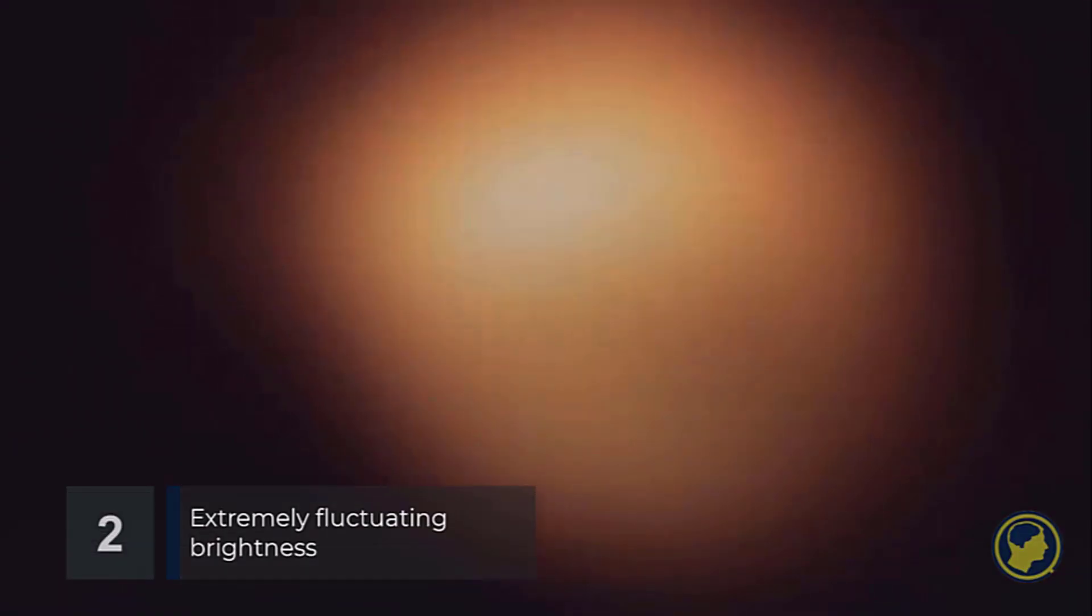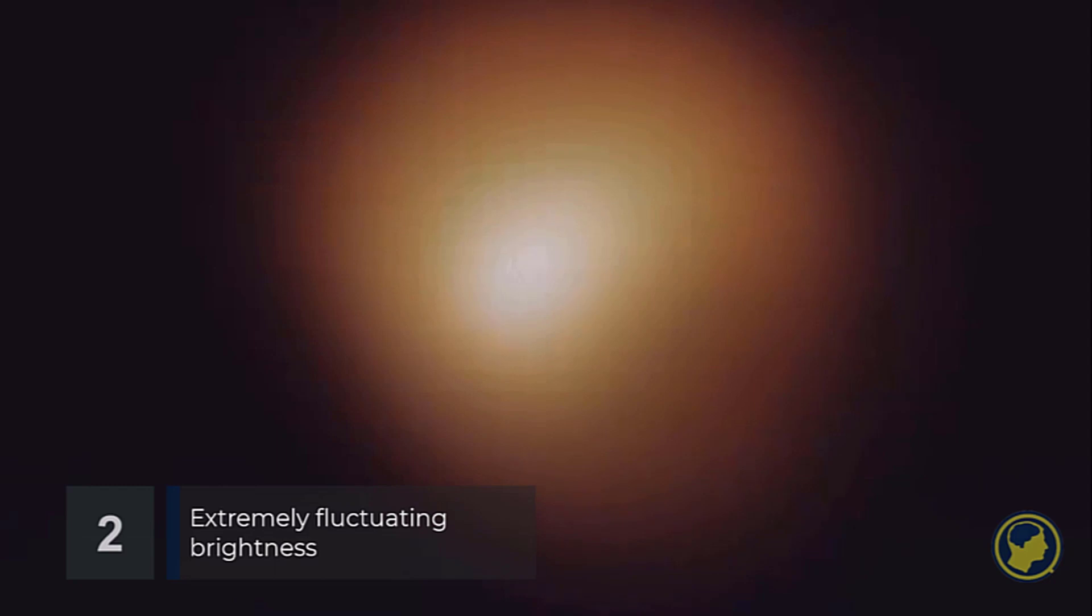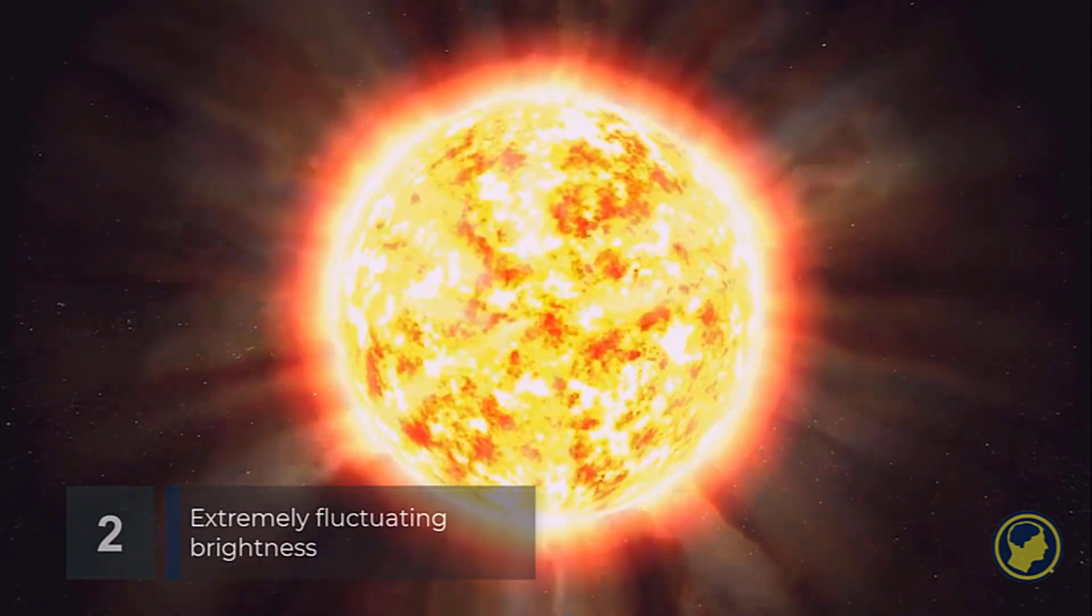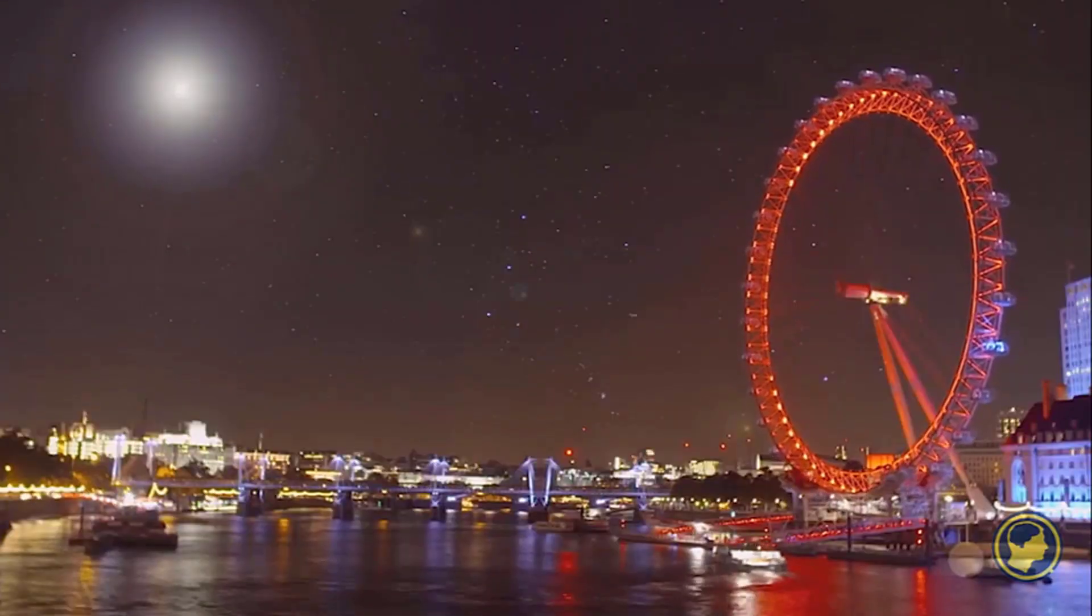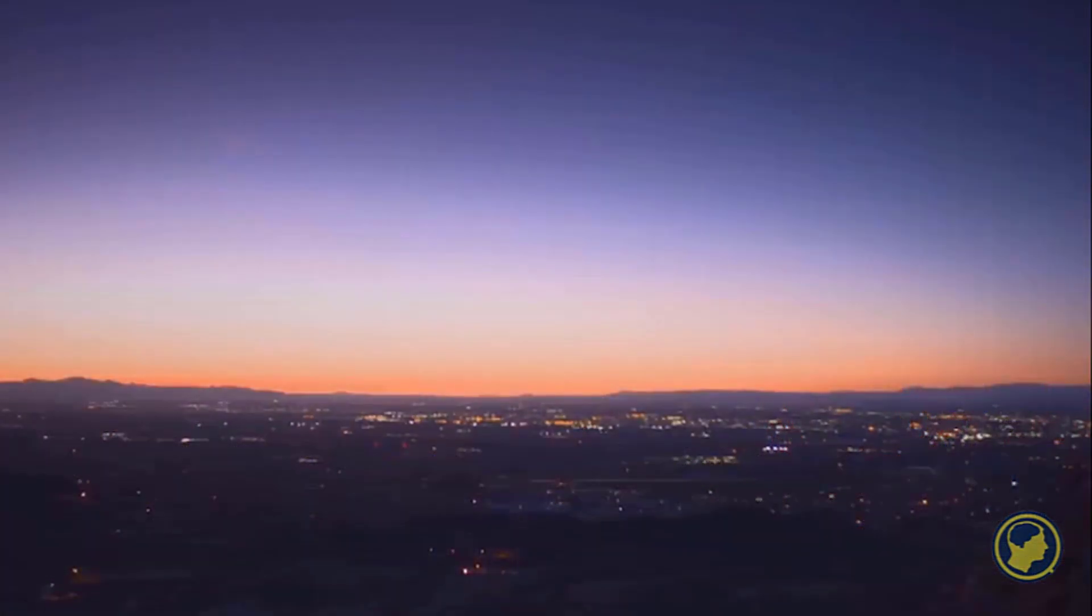Red supergiants this large are intrinsically unstable. Although Betelgeuse has a luminosity around 13,000 times that of the sun, its brightness fluctuates between 0.2 and 1.2 magnitudes in the night sky.